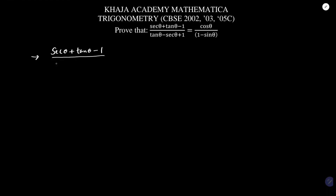One of the most important problems: prove that (sec θ + tan θ - 1)/(tan θ - sec θ + 1) equals cos θ/(1 - sin θ). We will take the LHS: (sec θ + tan θ - 1)/(tan θ - sec θ + 1).